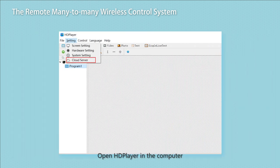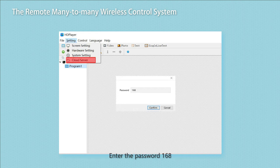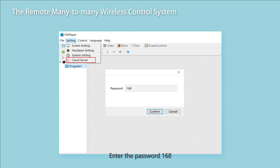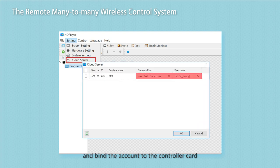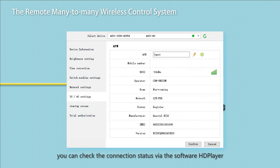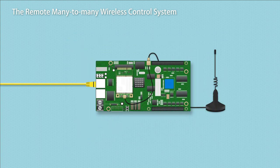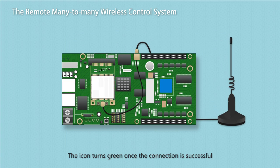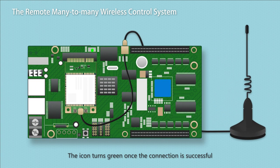Visit www.led.cloud.com via Internet Explorer and create your account. Open HD Player on the computer, click Settings and select Cloud Service Setting. Enter the password 168 and bind the account to the controller card. After inserting the SIM card, you can check the connection status via HD Player. The icon turns green once the connection is successful.